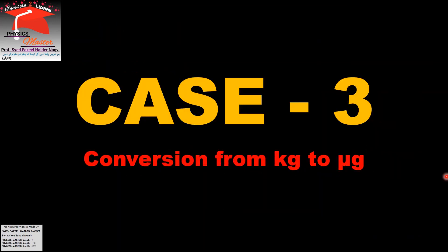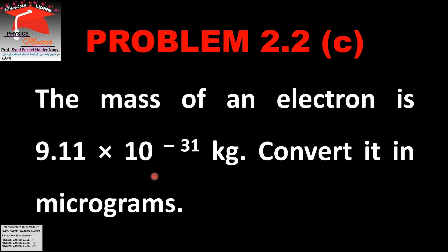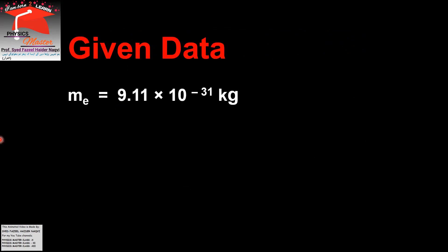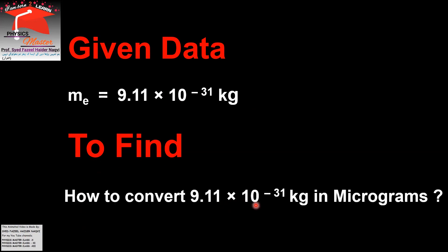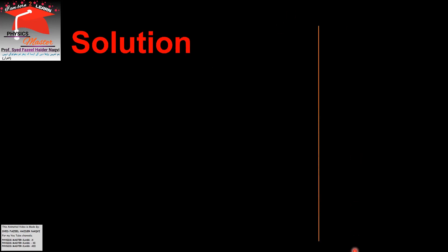Case 3: Conversion from kilogram to microgram. The mass of an electron is 9.11 into 10 to the power minus 31 kg, to be converted into micrograms. Case 3 follows the same method as Case 2, but just the values change. Given data: mass of electron is 9.11 into 10 to the power minus 31 kg. To find: how to convert into micrograms. Solution — rough work heading: the prefix is micro, and micro is equal to 10 to the power minus 6.